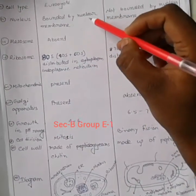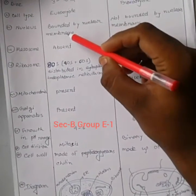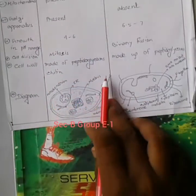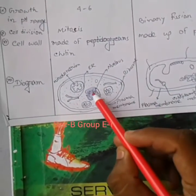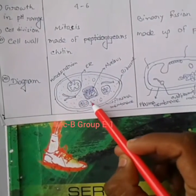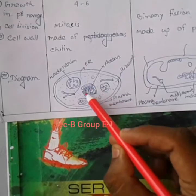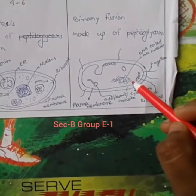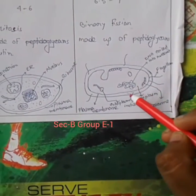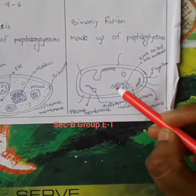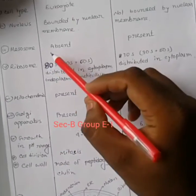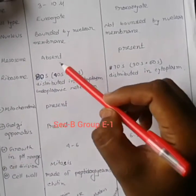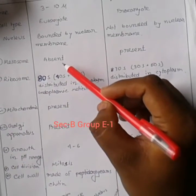The nucleus of fungi is bounded by a nuclear membrane. Here is a diagram showing that the nucleus has been bounded by a nuclear membrane. But in the case of bacteria, there is no nuclear membrane present.